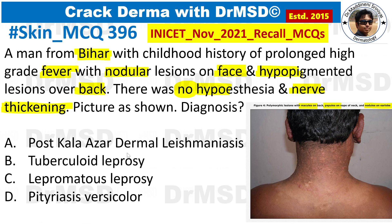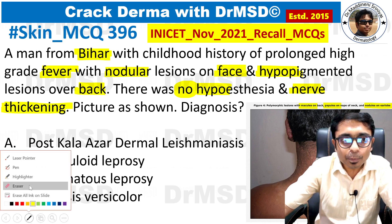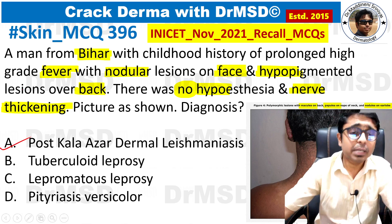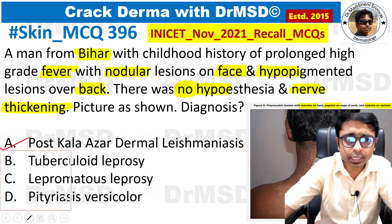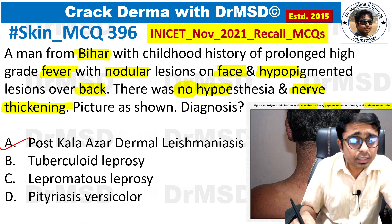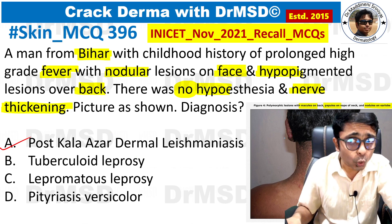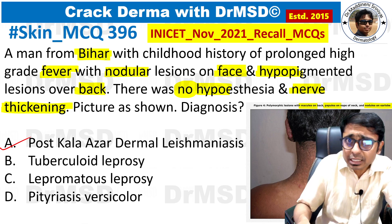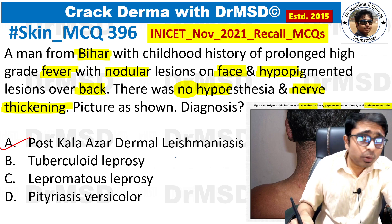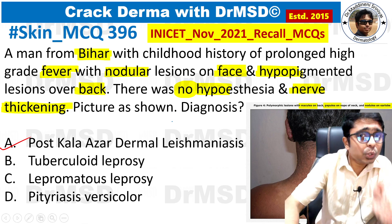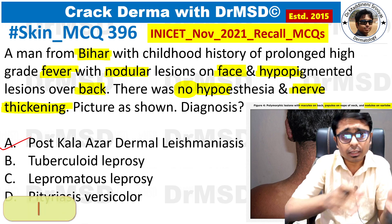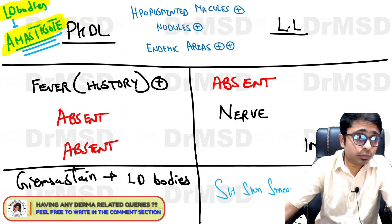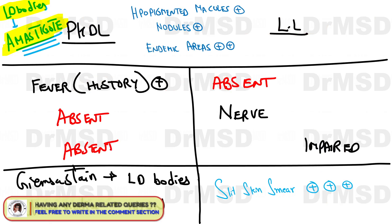With all these clues, if you have made a diagnosis of Post Kala-azar Dermal Leishmaniasis (PKDL), you are absolutely correct — PKDL is the answer here. Some students have asked: the patient has nodules over the earlobe and is from Bihar, so why can't this be leprosy? These two diseases are very close differentials, and there are subtle features which differentiate them.